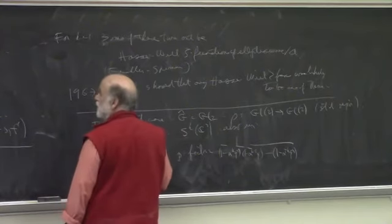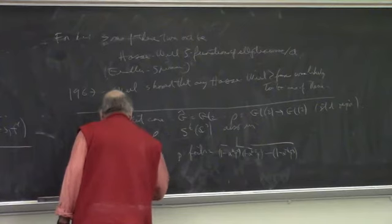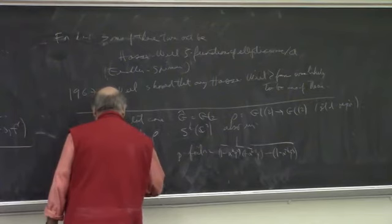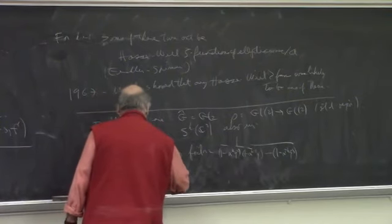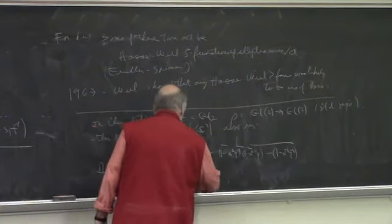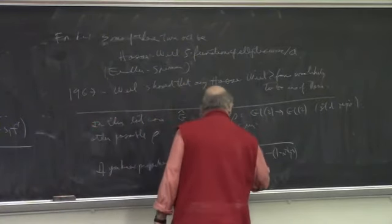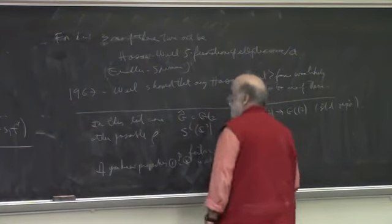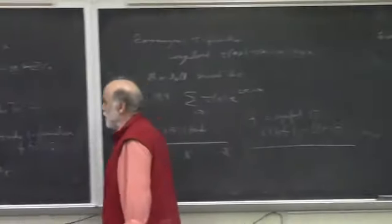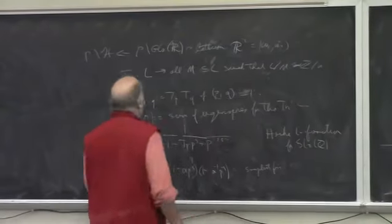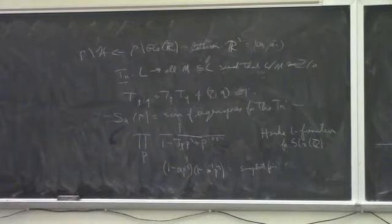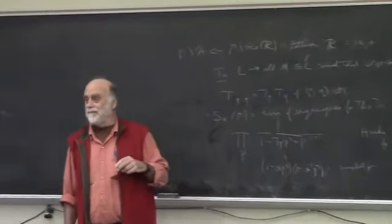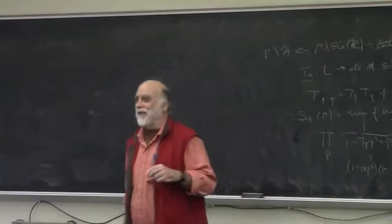For example, the Bay conjectures follow from this. If you prove properties one to four for these, all kinds of interesting things. Deligne used a variant of Serre's solution to prove the Weil conjecture.